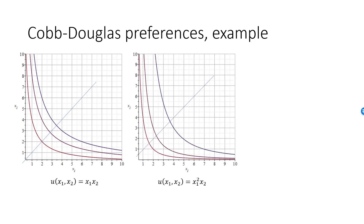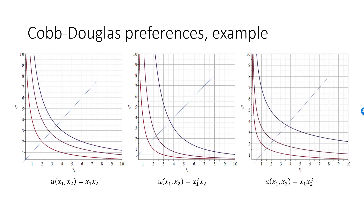Next, we have a Cobb-Douglas utility function where the exponent on x1 is greater than the exponent on x2. In this case, the indifference curve is steeper along the blue line, and more than one unit of good two is required for her to give up one unit of good one when she is consuming an equal amount of these goods. You can see that she has a preference bias towards good one. The opposite is true if the exponent on x2 is larger than the exponent on x1 — the absolute value of MRS is less than one for bundles with an equal amount of each good, and she has a preference bias towards the second good.